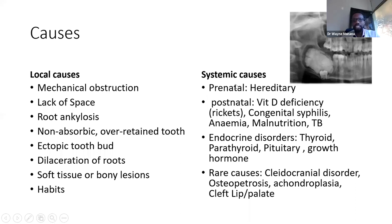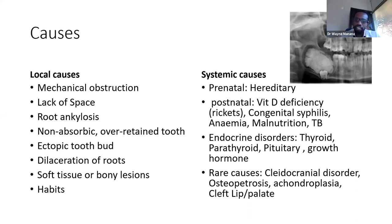Systemic causes include a long list: thyroid disease, parathyroid disease, pituitary adenomas. The pituitary-thyroid-adrenal axis regulates the growth system in the body and therefore affects jaw growth by default. Cleft patients and other systemic conditions also fall into this category.